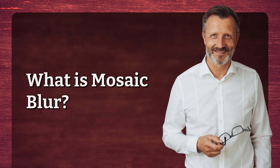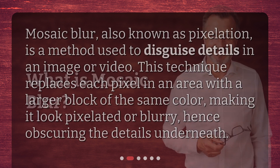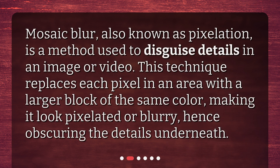What is mosaic blur? Mosaic blur, also known as pixelation, is a method used to disguise details in an image or video. This technique replaces each pixel in an area with a larger block of the same color, making it look pixelated or blurry, hence obscuring the details underneath.